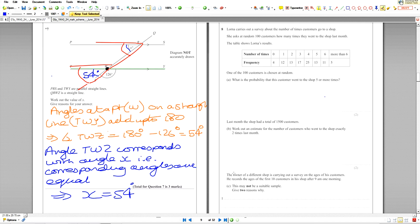Okay, so this is called experimental probability. From actually experimenting and doing it in real life, she's managed to get these results. So one of the 100 customers is chosen at random. What is the probability that this customer went to the shop five or more times?